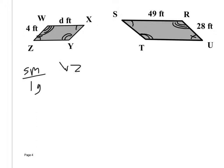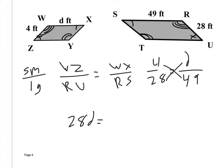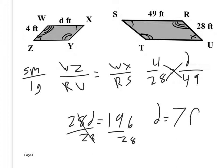The first side I'll use is WZ — what is it proportional to? RU. Then I use WX, which is proportional to RS. Plugging in numbers: WZ is 4, RU is 28, WX is d, and SR is 49. Cross multiplying gives 28d equals 196. Dividing by 28, d equals 7 feet. Make sure you include your units.